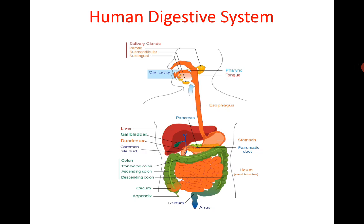The epiglottis is a cartilaginous flap that guards the glottis. It remains closed while swallowing, a process called deglutition. The epiglottis is present in the pharynx between the oropharynx and the tracheal opening, preventing food from entering the trachea. The oropharynx then opens into the esophagus.